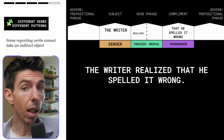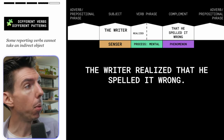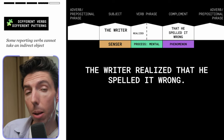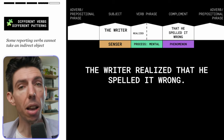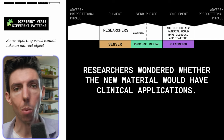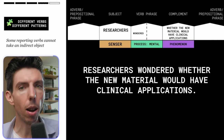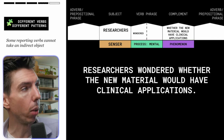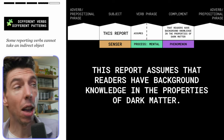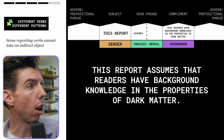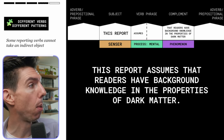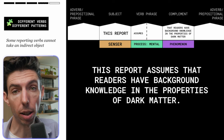For example, 'realize' does not allow an indirect object. 'The writer realized that he spelled it wrong' — you cannot say 'the writer realized the reader that he spelled it wrong.' Another is 'wonder' — you cannot wonder to someone else. 'Researchers wondered whether the new material would have clinical applications' — that cannot take an indirect object. Similarly, 'assume' cannot take an indirect object: 'This report assumes that readers have background knowledge in the properties of dark matter.' You cannot include an indirect object with 'assume.'